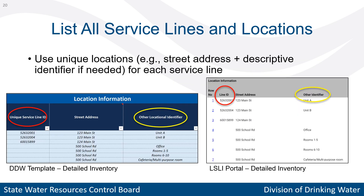Each service line should have a unique locational identifier in the detailed inventory. We recommend using street addresses where possible, but other identifiers such as a block, intersection, or pair of GPS coordinates could be used as well. Systems often use the Line ID column, circled in red, if they have account numbers or meter numbers. Building descriptions and other information can go in the Other Identifier column, circled in yellow.